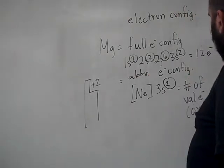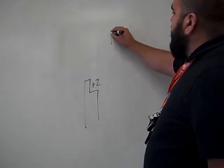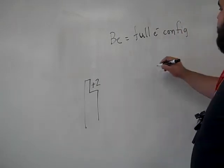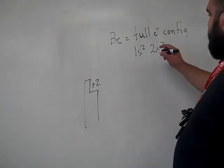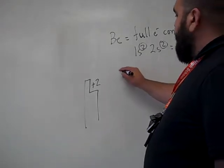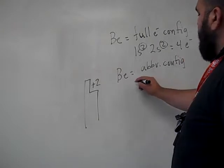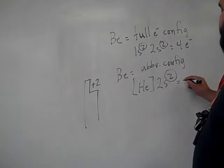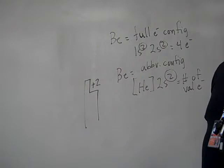If we do beryllium, I'm going to go ahead and erase this. You'll see that it also falls at a plus 2. Beryllium full electron configuration looks like this: 1s2, 2s2, right? And beryllium has 4 electrons. But beryllium abbreviated configuration, we use the last known noble gas which is helium, and then we do 2s2. This is the number of valence electrons, plus 2.